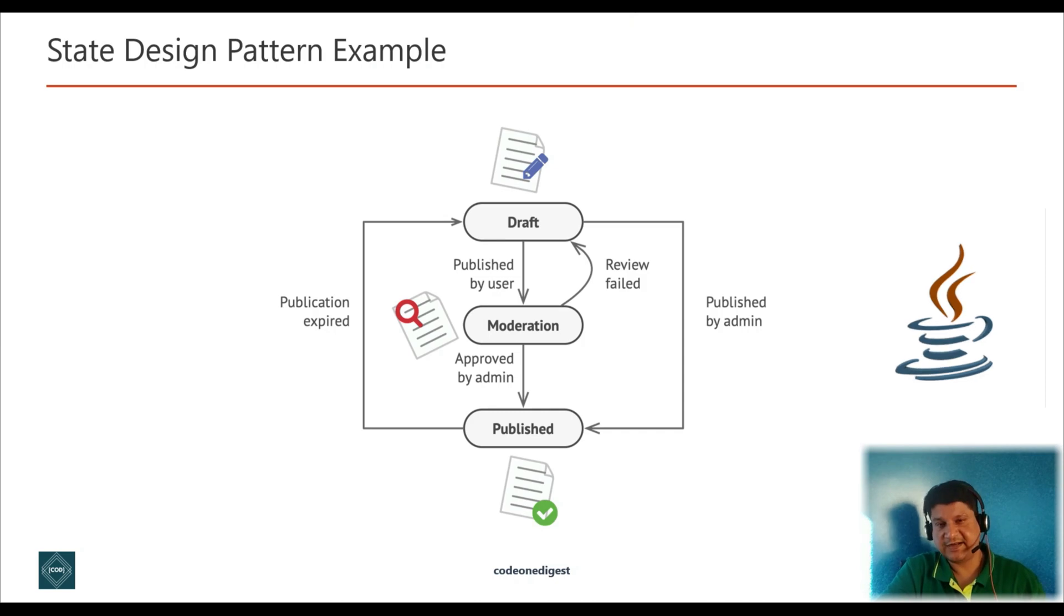State pattern allows an object to change its behavior depending on the current value of an object. Friends, let's understand state design pattern with an example. Imagine we have a document class. A document can be in one of the three states: draft, moderation, and published. The publish method of the document works a little bit differently in each state. In draft, it moves the document to moderation. In moderation state, it moves the document to public. And in publish, it doesn't do anything.